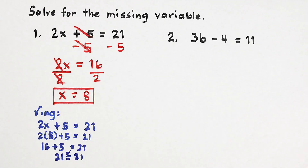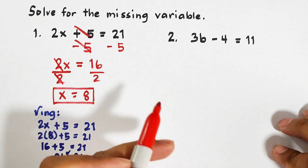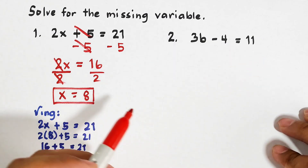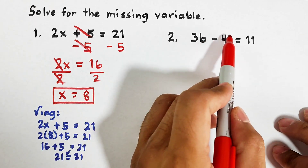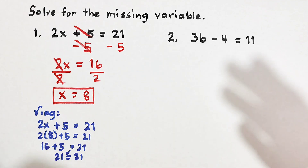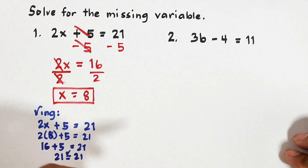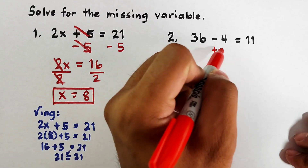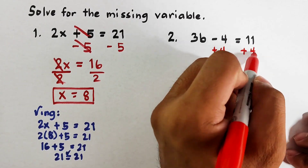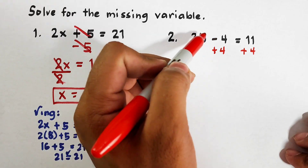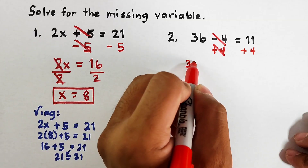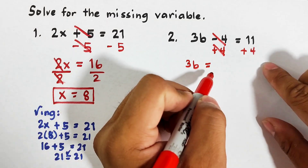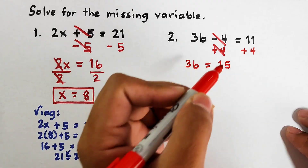Now let's move on with item number 2. We are given 3b minus 4 is equal to 11. We need to find the value of b. First we eliminate minus 4 — the inverse operation of minus is add, so we add 4 on both sides of the equation. Negative 4 plus 4 becomes 0, so we eliminate that. What we have now is 3b is equal to 11 plus 4, which is 15.